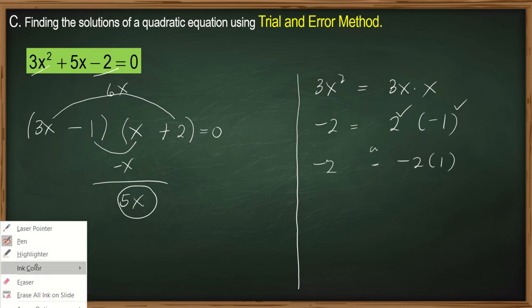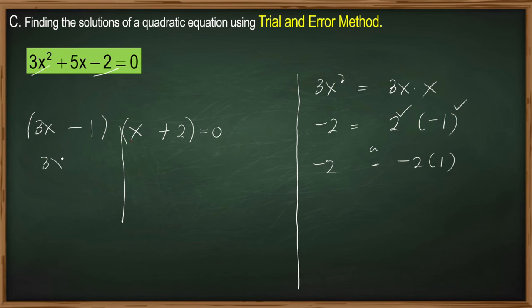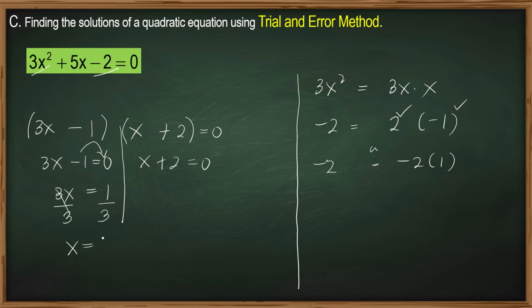Now we are going to apply the zero product property to solve for x — equate each factor to zero. Transpose negative 1; it becomes positive 1. What's left is 3x. We need x, so we isolate it by dividing both sides by 3. So x is equal to 1 third.